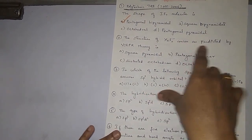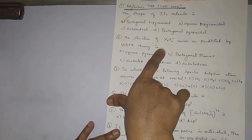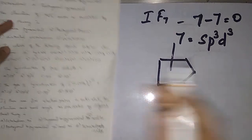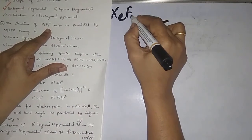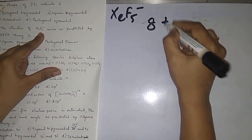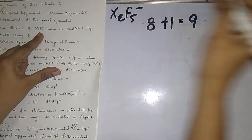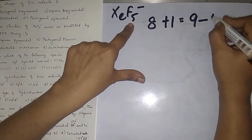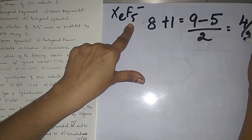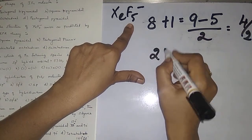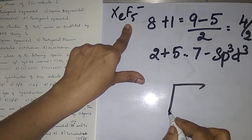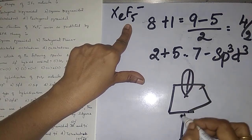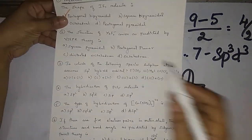The second question: the structure of XeF5⁻ anion as predicted by VSEPR theory. Xenon has 8 valence electrons. XeF5⁻ has a minus charge, so we add one electron — giving 9. Then 9 minus 5 bonded atoms divided by 2 gives 2 lone pairs plus 5 bonded atoms, total 7: sp3d3. With 2 lone pairs, the structure is pentagonal planar.